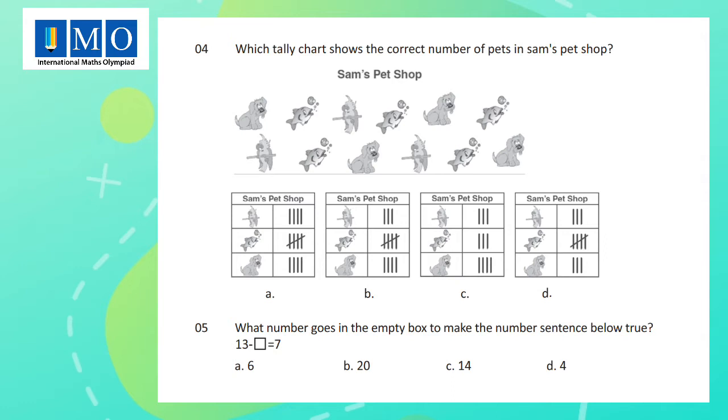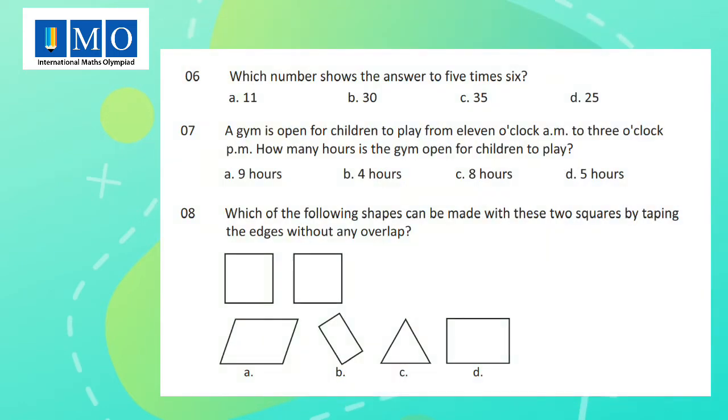Question 5: What number goes in the empty box to make the number sentence below true? Question 6: Which number shows the answer to 5 times 6? Question 7: A gym is open for children to play from 11 o'clock a.m. to 3 o'clock p.m. How many hours is the gym open for children to play?